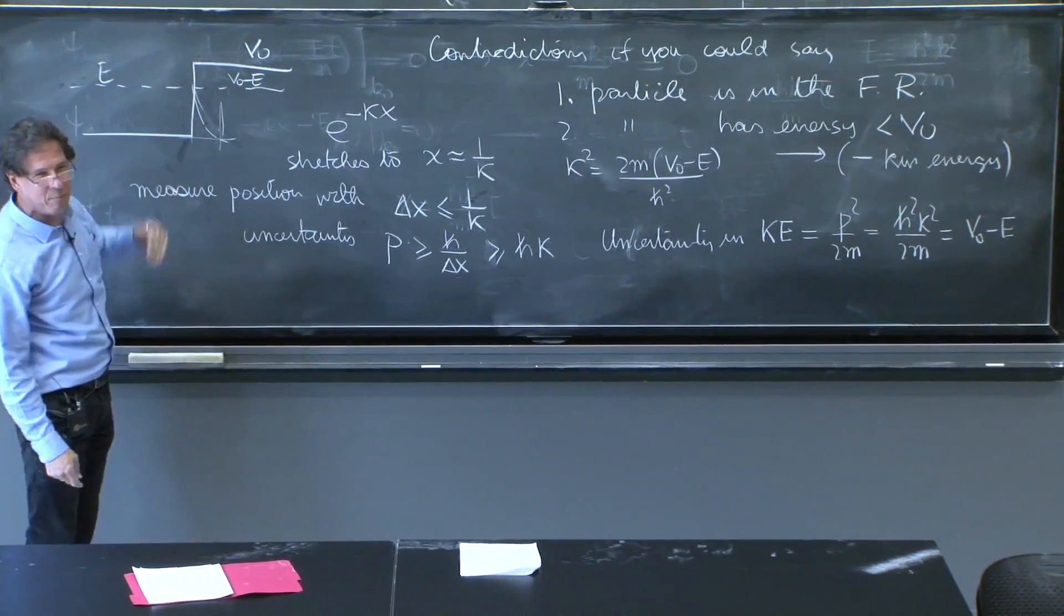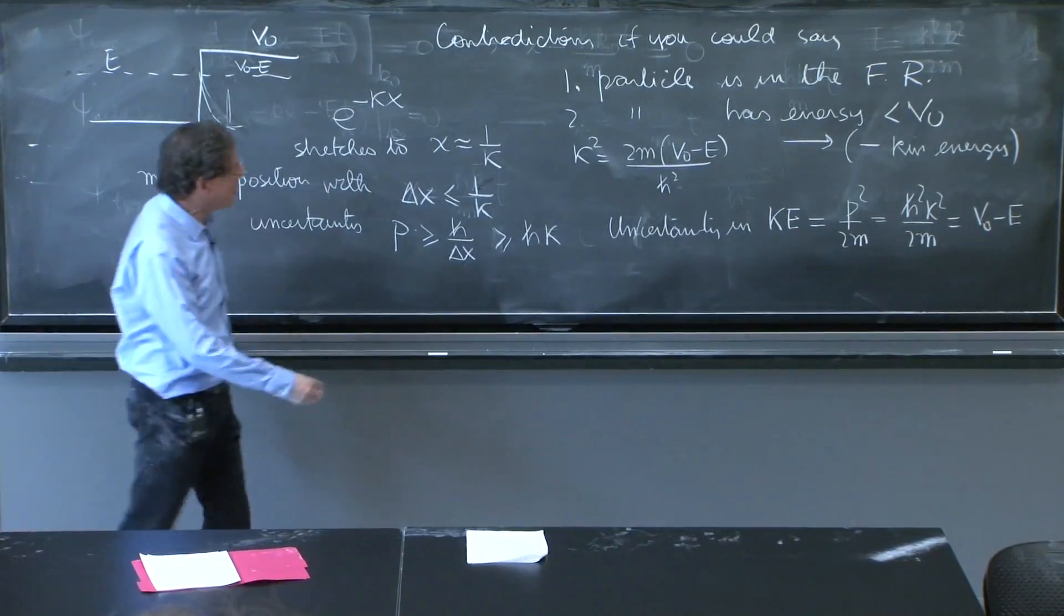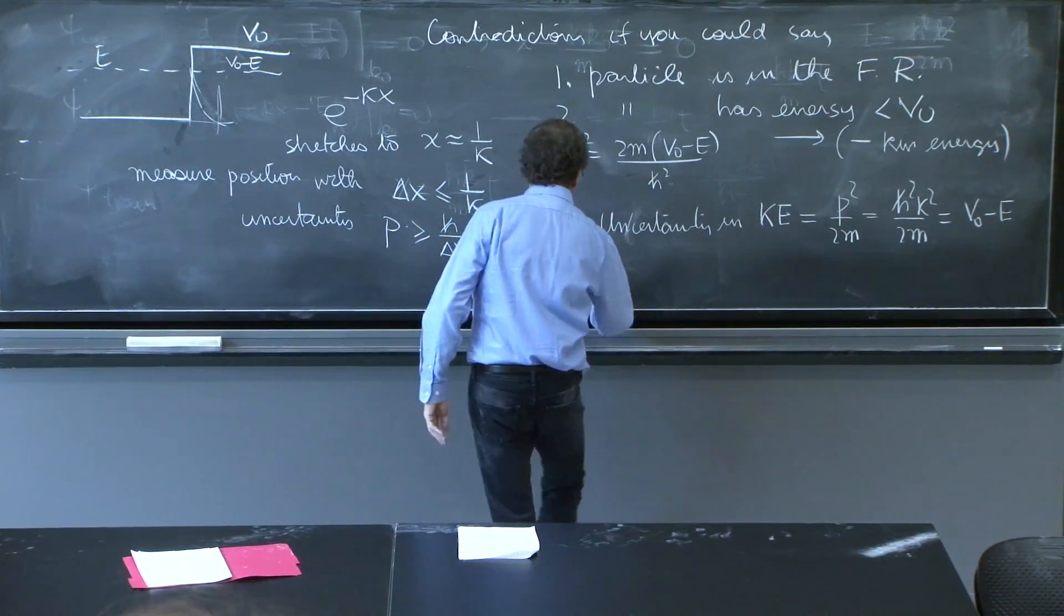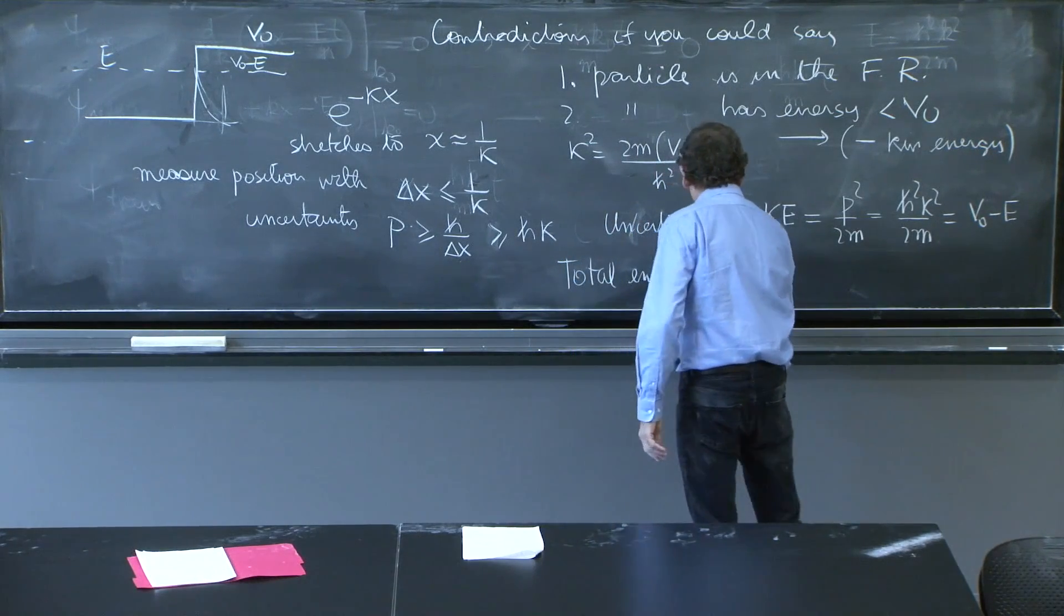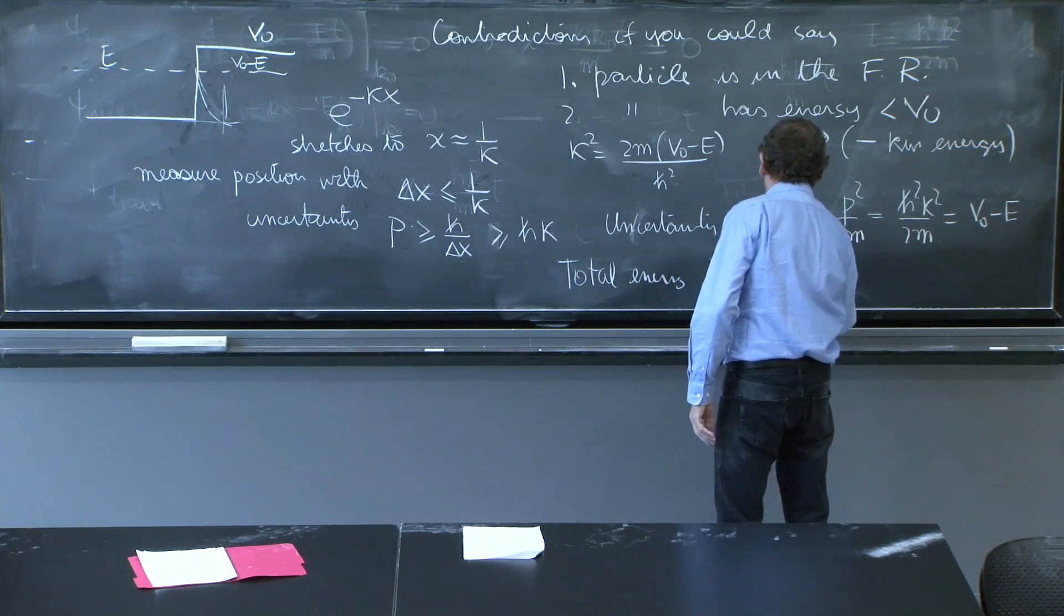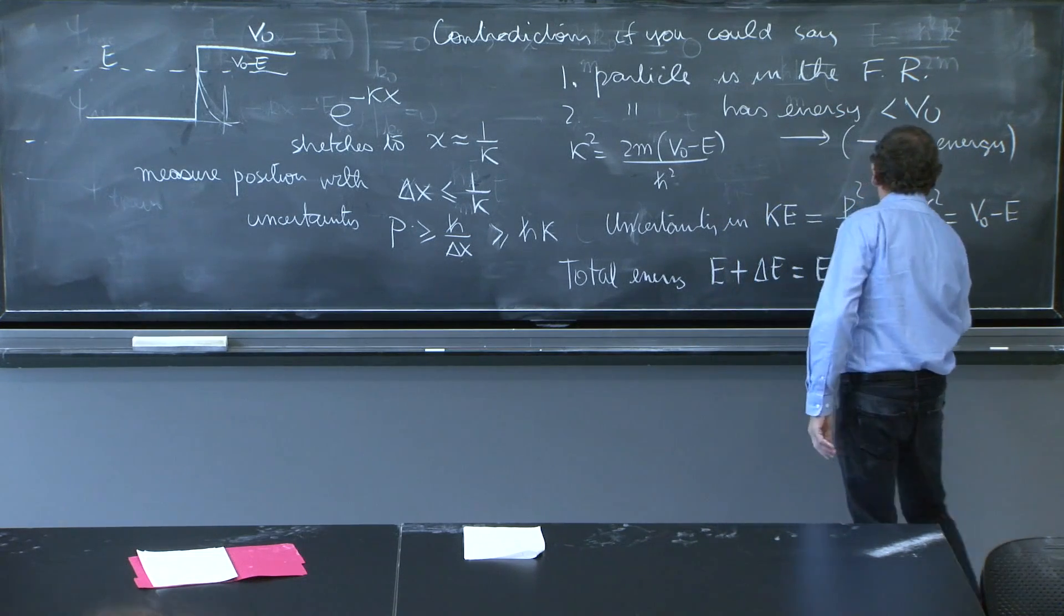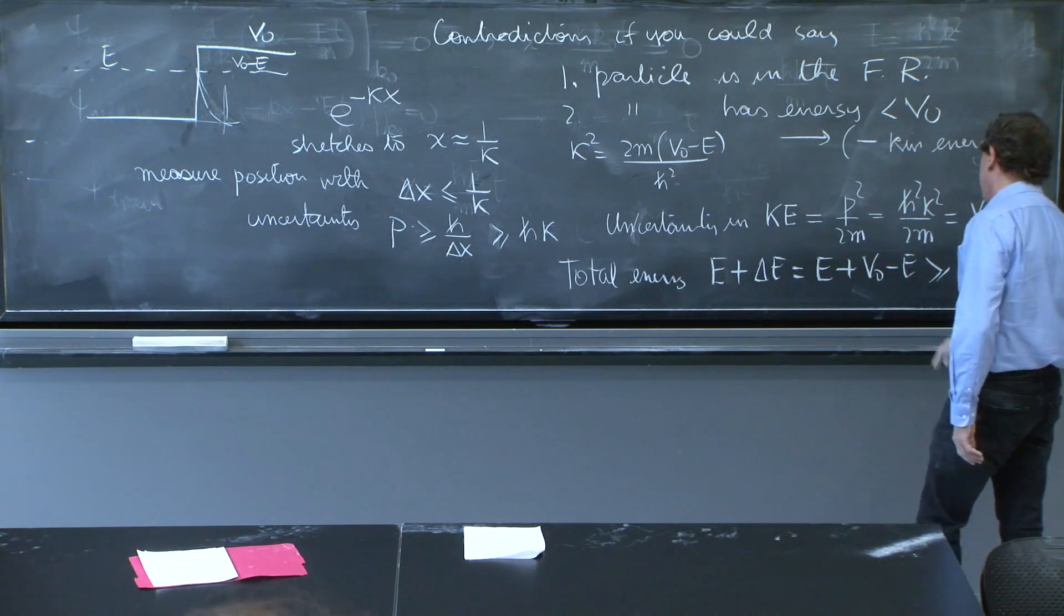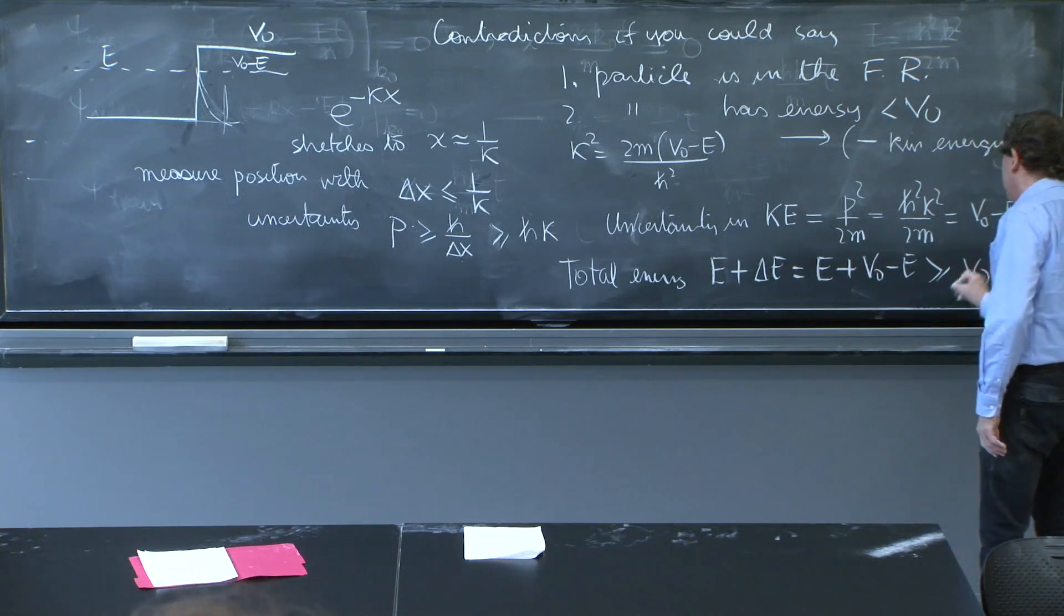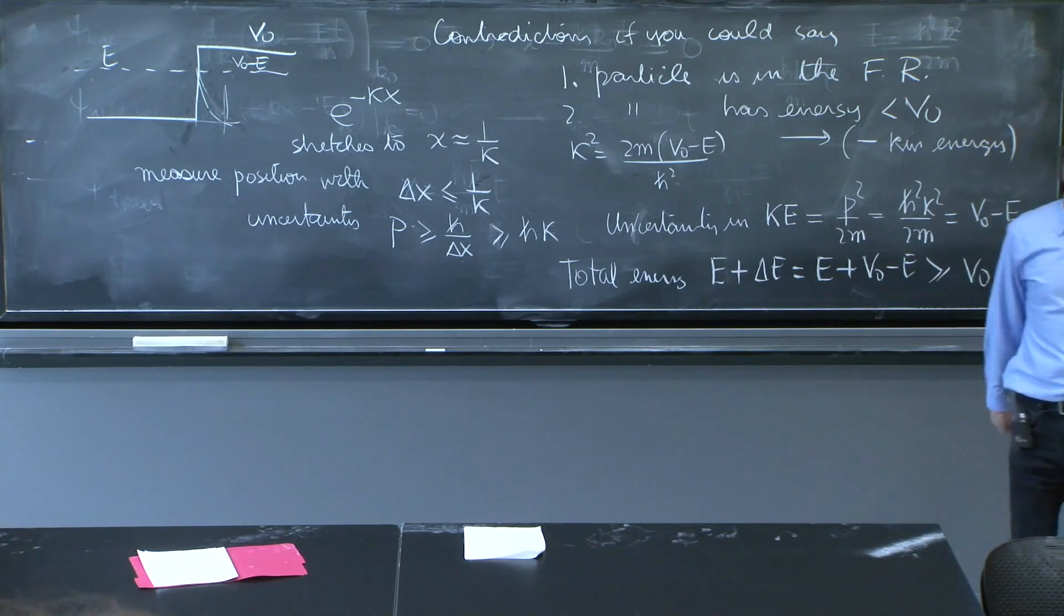So whatever you wanted to prove has been disproved. You can't do it. The total energy is now E plus the uncertainty in energy, which is E + (V₀ - E), and it's therefore greater than or equal to V₀. No real contradiction.